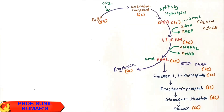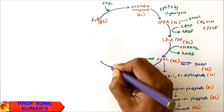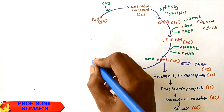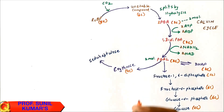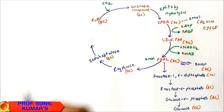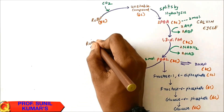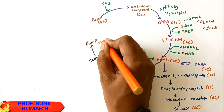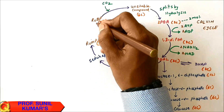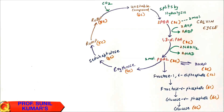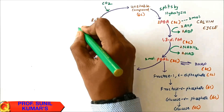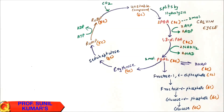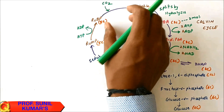The other molecule of PGAL becomes erythrose, a four-carbon compound. Erythrose gets converted into seduheptulose, a seven-carbon compound. Seduheptulose is then converted into RUMP — ribulose monophosphate — a five-carbon compound. RUMP then undergoes phosphorylation using ATP, converting to ADP, and the phosphate goes to RUMP to form RUBP — ribulose biphosphate — and the cycle repeats.